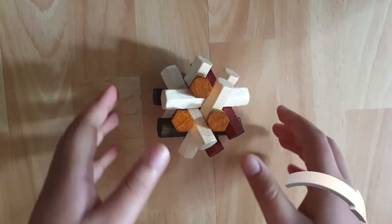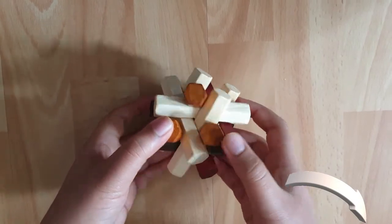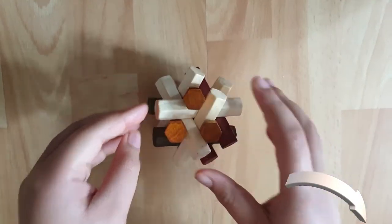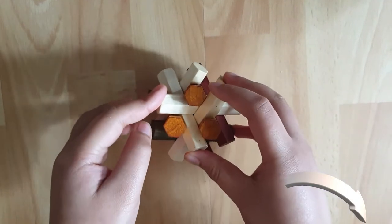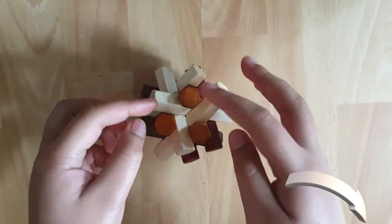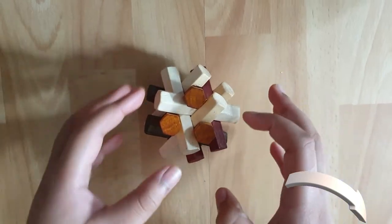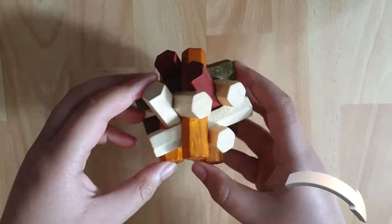Hello everybody and today I'm going to be showing you how to put together the hex sticks coffin burr puzzle. It is a really long name, and basically there's 12 pieces and you have to put them together and it looks something like this.